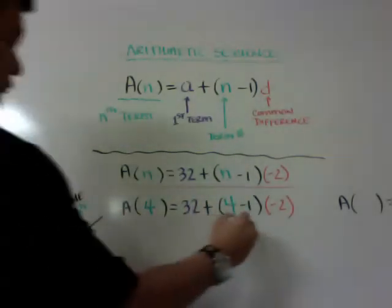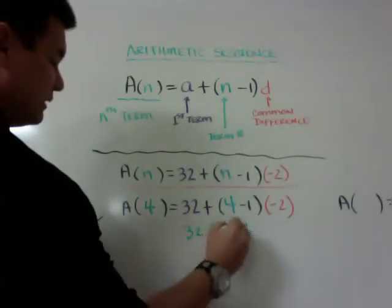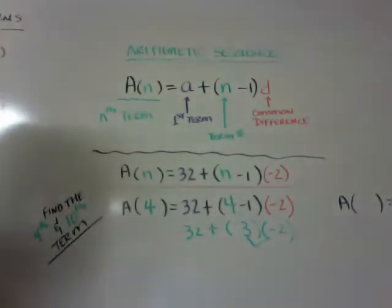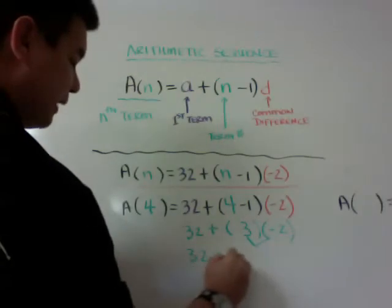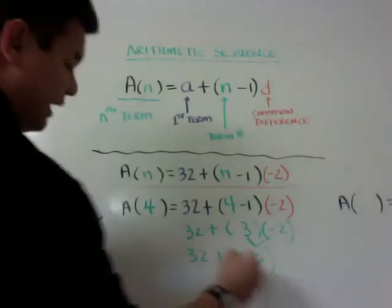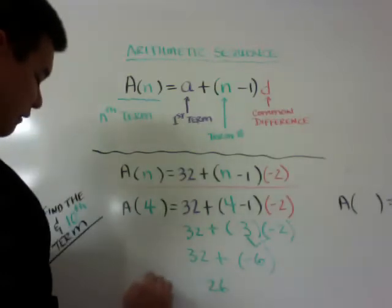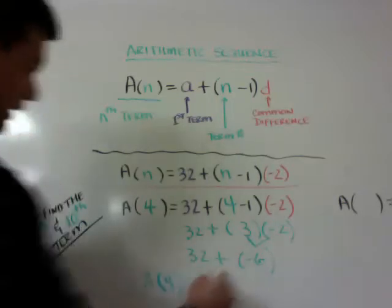Now when I solve it, I have to do parentheses first, so it becomes 32 plus 3 times negative 2, and then I need to make sure I do PEMDAS. So I need to do the multiplication, so 32 plus negative 6 or minus 6, and I get 26. So A(4) is equal to 26.